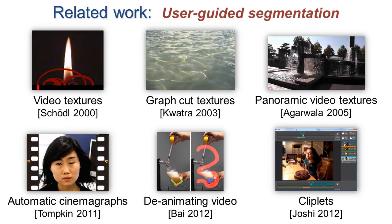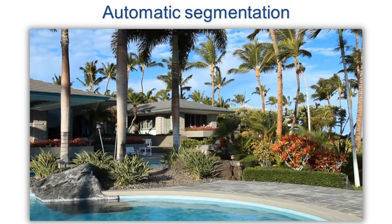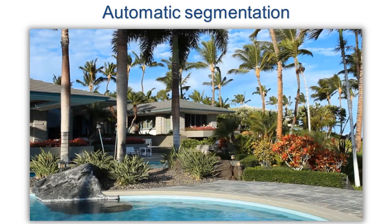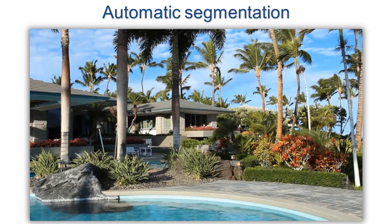Previous work involves user guidance to segment a complex scene into separate looping regions. We redesign an optimization algorithm to analyze a short input video and automatically segment it into regions with natural periods — here green for short periods and red for long ones.